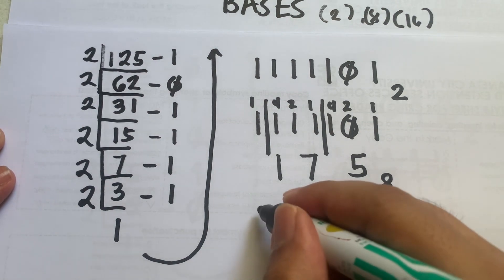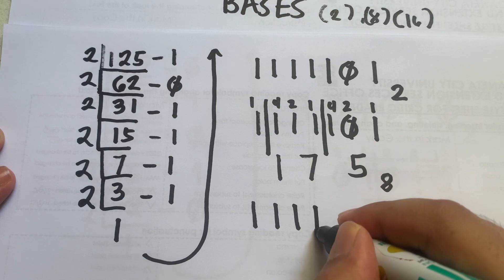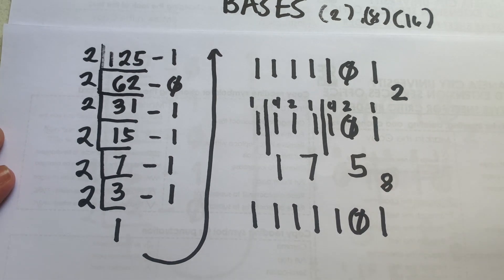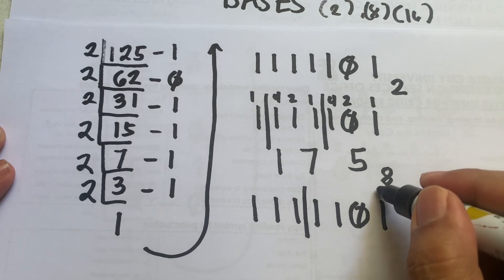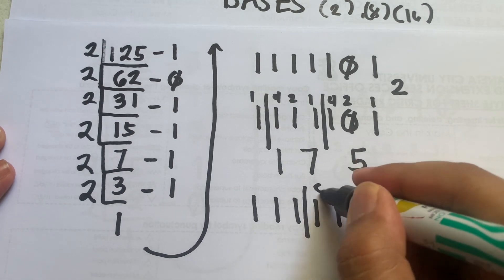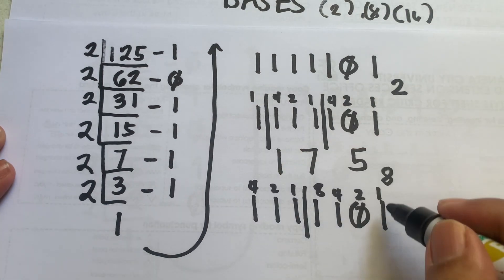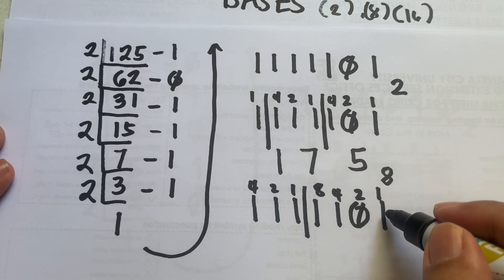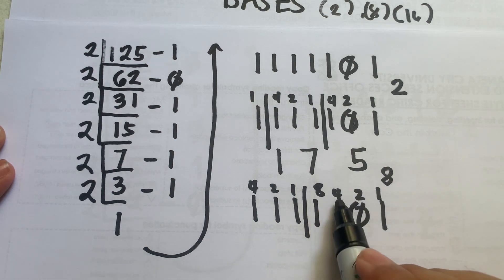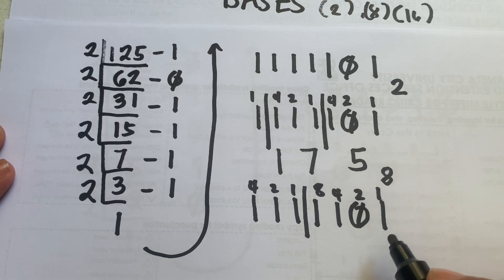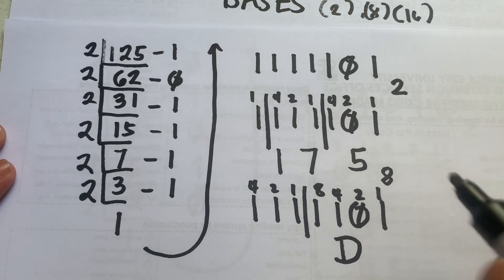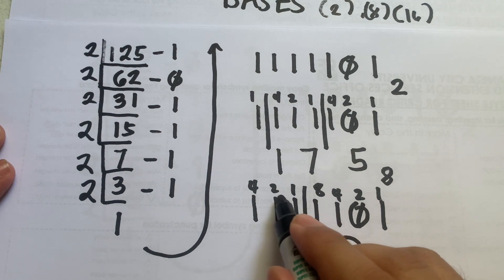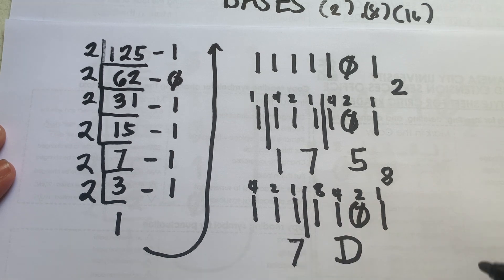To get the hexadecimal equivalent, we use the binary equivalent 1111101 and group the digits into sets of 4 starting from the right. Using positional values 1, 2, 4, 8: we add the values opposite 1, so 1 plus 4 plus 8 equals 13. In hexadecimal, 13 is represented by D. The remaining group gives 1 plus 2 plus 4 equals 7. So the hexadecimal equivalent of 125 is 7D.